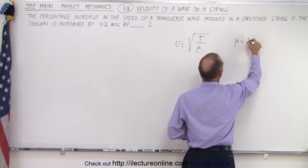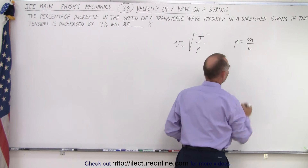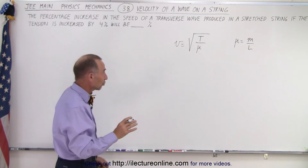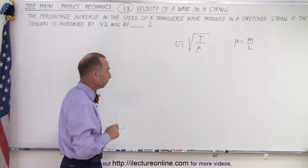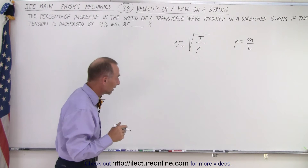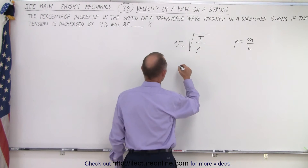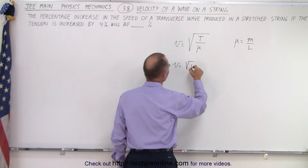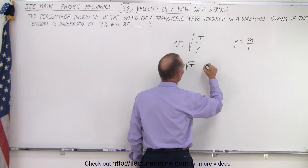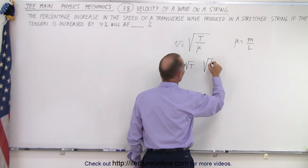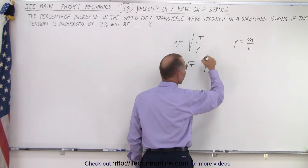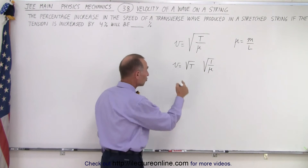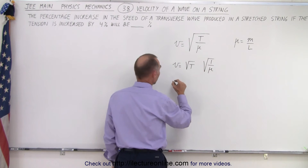So mu is equal to the mass of the string divided by the length of the string. Now, that's going to be a constant — that doesn't change. We're just changing the tension. And so what we can say here is that velocity is equal to the square root of T times the square root of 1 over mu. So this is simply a constant times this. Now, what is going to be the change in V when we change T?